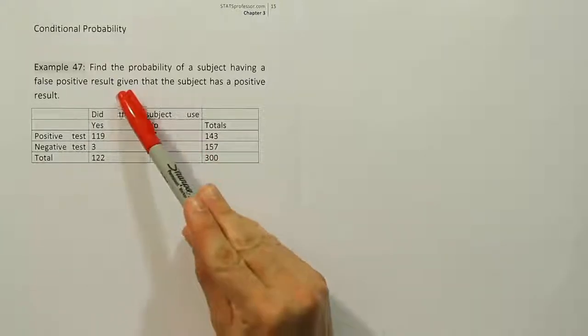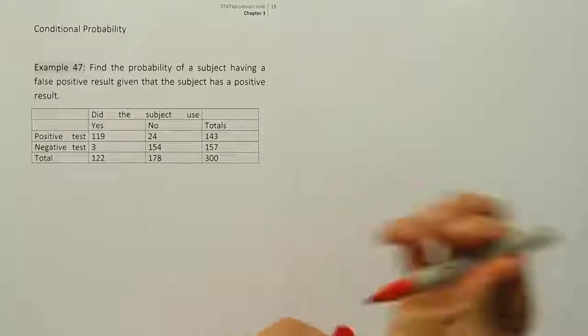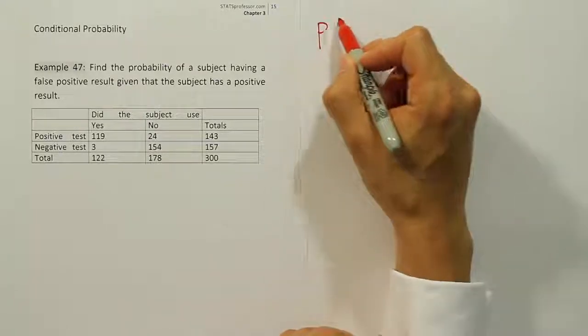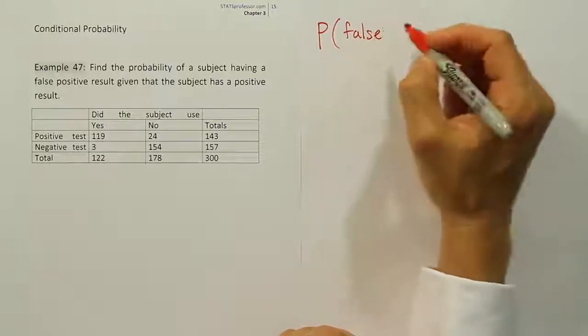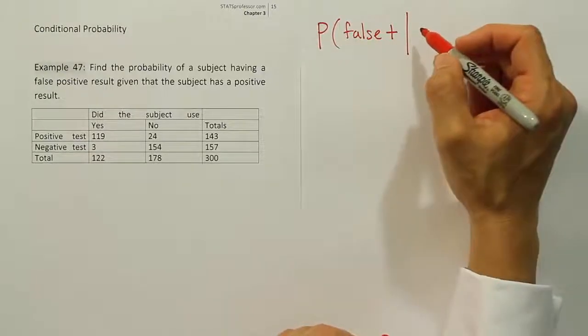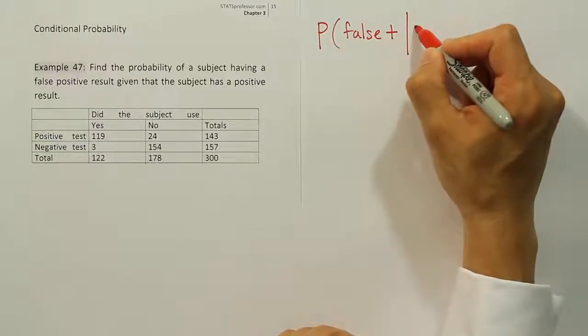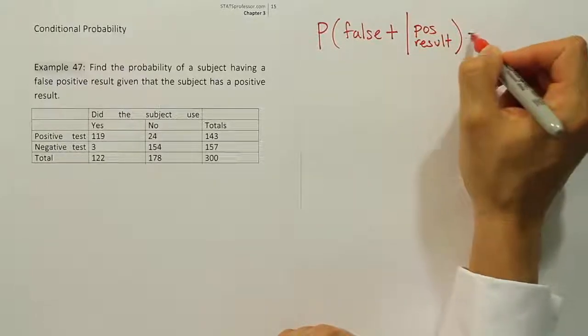So this given that phrase is a key phrase that indicates conditional probability. So let's write out the statement here as follows. So it's the probability of a subject having a false positive given that the subject has a positive result, right? Positive result.